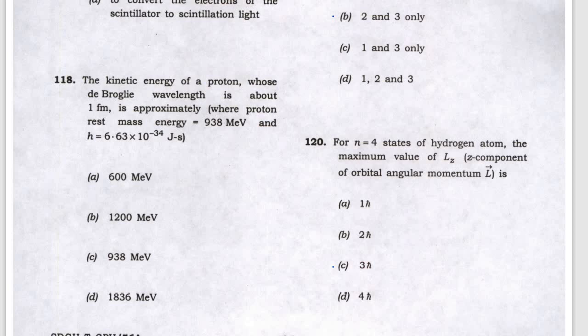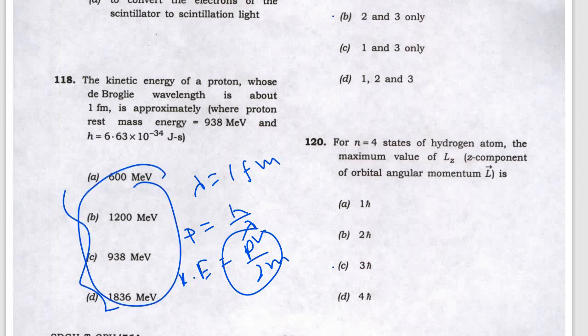For the kinetic energy of the photon whose de Broglie wavelength lambda is given as one femtometer, you can get p equals h by lambda. If you solve the kinetic energy problem, there's no value of the mass given, so this is doubtful. You can check also.